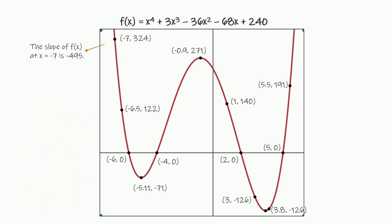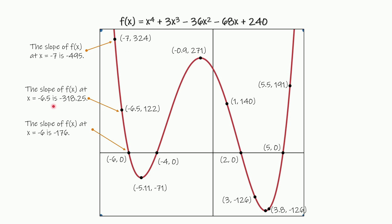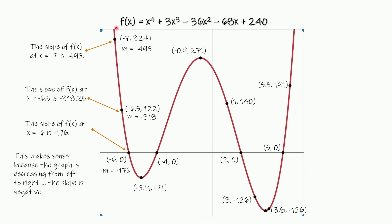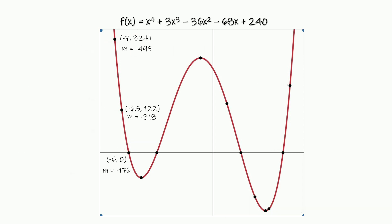Since we're doing calculus, let's talk about slope — calculus is very interested in slope. The slope here is negative 495, and at negative 6.5 it's negative 318, and at negative 6 it's negative 176. Now if you were to find these values yourself, I did round them just so they fit on the screen. All of these slopes are negative, which makes sense because the graph is decreasing from left to right — it's going down and down and down.